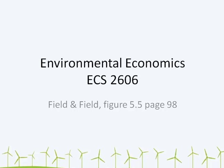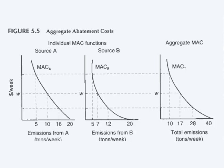We are looking at Figure 5.5, page 98 of your textbook. This figure shows you how to add up individual marginal abatement cost functions in order to get the total or aggregate marginal abatement cost function.